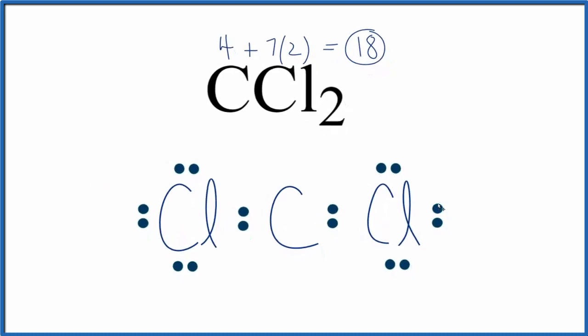At this point, we've used 16 valence electrons out of 18 total. We'll put the remaining two on the carbon. If we calculate the formal charges for this structure, we'd find they are all zero. So this is the best or most favorable Lewis structure for CCl2.